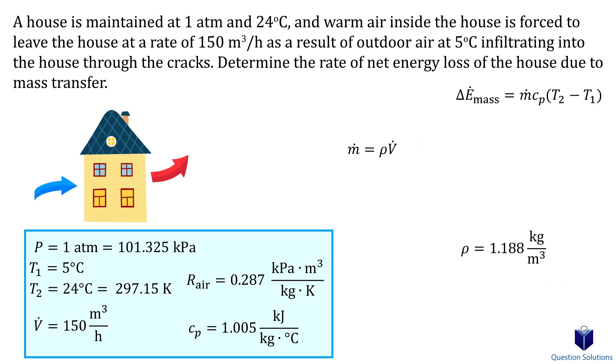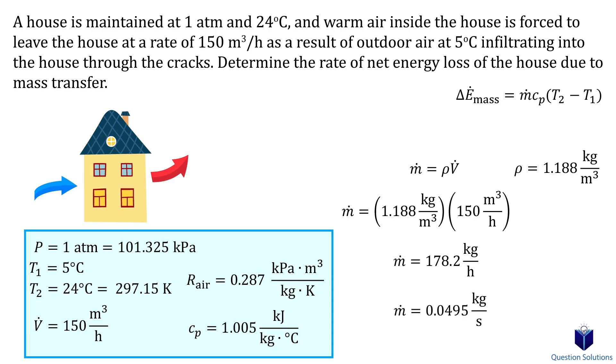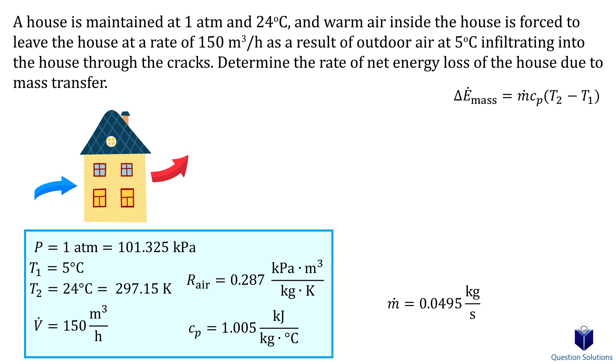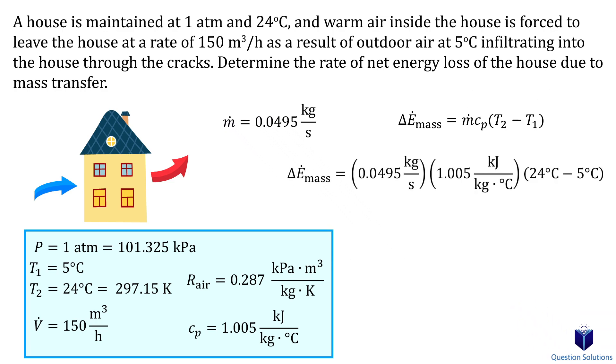Now we can use this value to figure out the mass flow. Our answer is in kilograms per hour, so let's divide it by 3600 to get it per second. We finally got our mass flow, so let's go back to our original equation and start plugging values in. Solving gives us 0.945 kilojoules per second or 0.945 kilowatts.